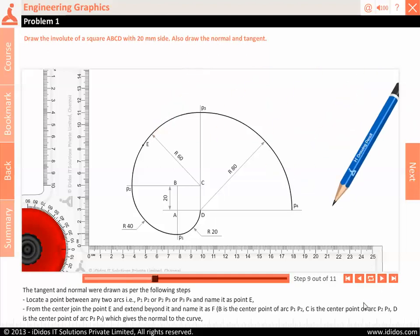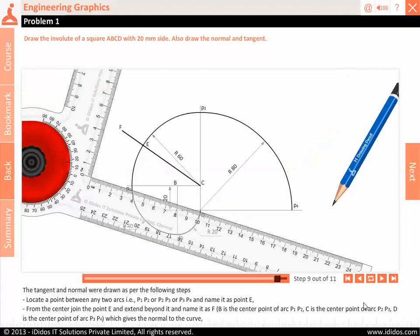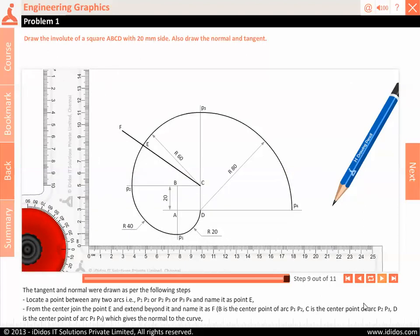The tangent and normal were drawn as per the following steps. Locate a point between any two arcs, i.e. P1, P2 or P2, P3 or P3, P4 and name it as point E. From the center, join the point E and extend beyond it and name it as F.